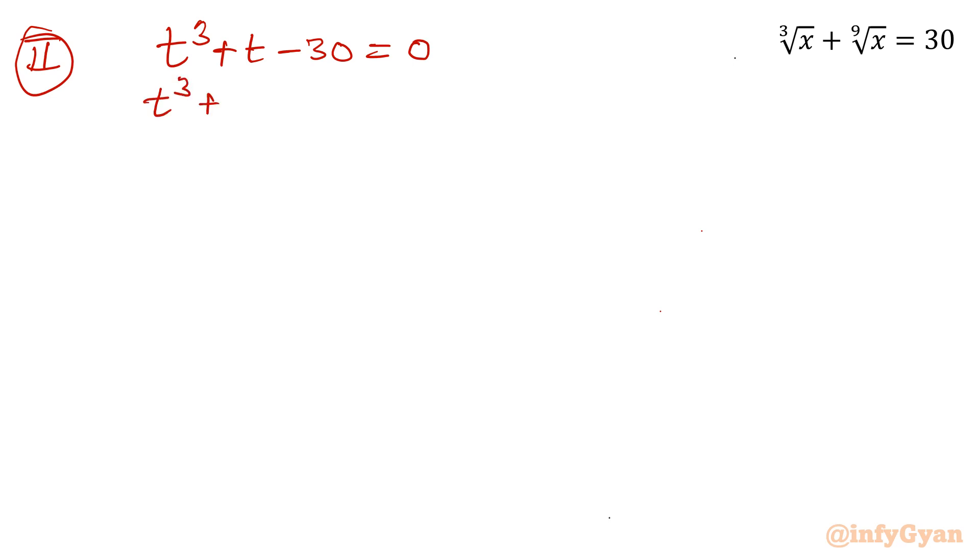I can write t cube plus t as t cube minus 27 plus 3. Then I can separate t cube minus 27 here plus t minus 3 here. I can see it is t cube minus 3 cube. So a cube minus b cube formula: a minus b times a square plus b square plus ab. So t minus 3 times t square plus 3t plus 9.